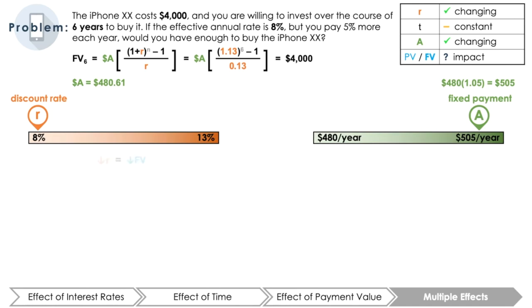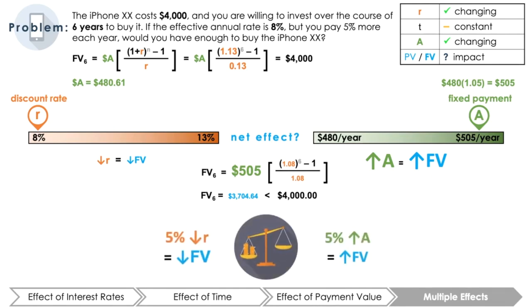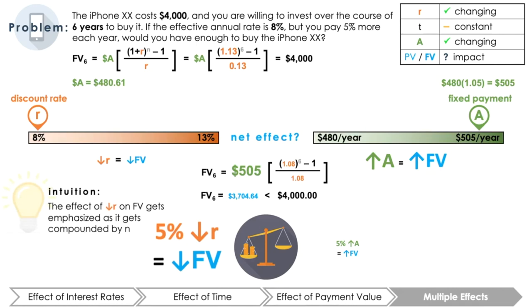We can expect that when the effective annual rate falls, the future value will fall because our money is not compounding or growing as quickly. Yet, with bigger fixed payments, we can expect that the future value will rise because we are contributing more money into our savings to buy that iPhone. So, what will the net effect be? We must use the FV of an annuity formula. Using $505 for the value of A, R equals 0.08, and T equals 6, the FV of the cash flows would be $3,704.64, not enough to buy the iPhone 20. This shows that the 5% increase in annual payment amount does not compensate for the 5% decrease in the effective annual rate. Intuitively, this makes sense given that in the FV of an annuity formula, the effective annual rate is compounded by the number of periods.